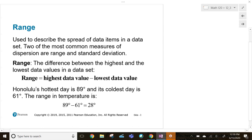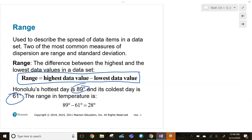So the range of the data set, that's the highest value minus the lowest value, that's it. So Honolulu's hottest day is 89, its coldest day is 61, its range in temperature is 28 degrees.